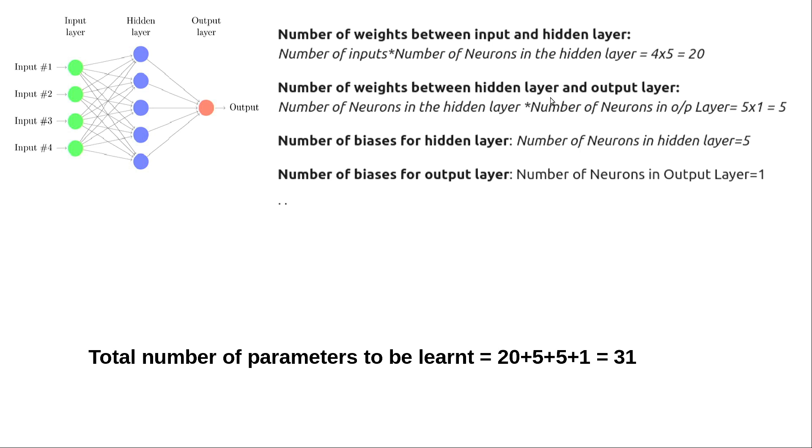The number of weights between the hidden layer and output layer would be the number of neurons in the hidden layer times the number of neurons in the output layer, which is 5 times 1, equals 5. We also have biases to consider. In the hidden layer, I have five neurons and five biases, so that's 5.